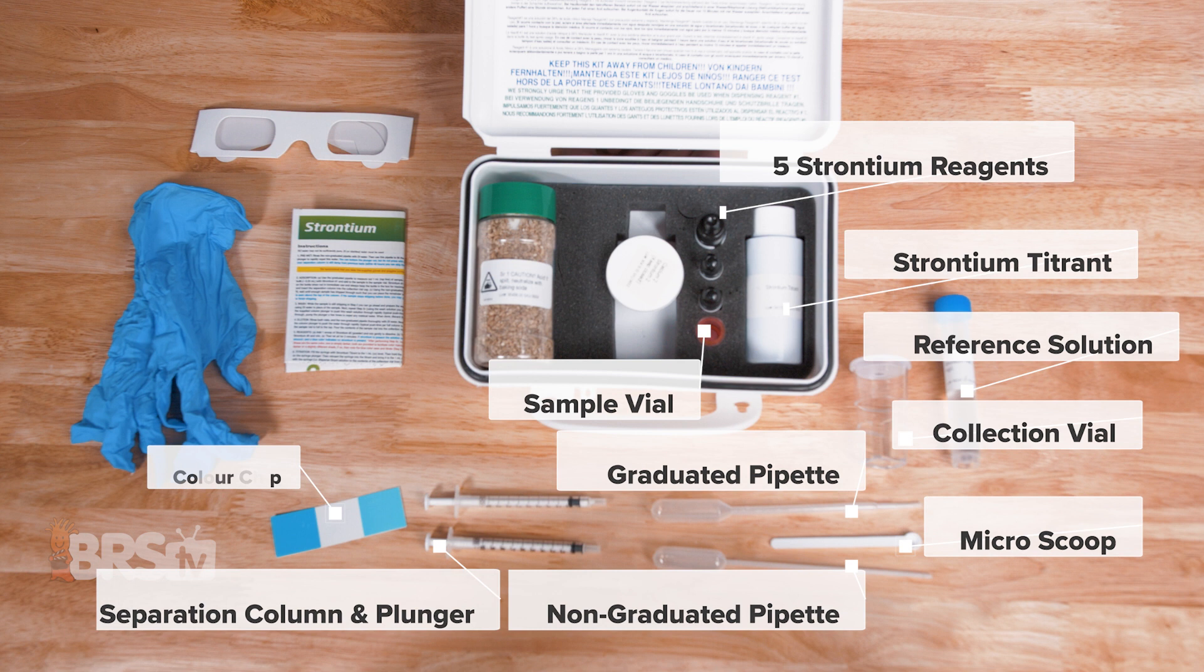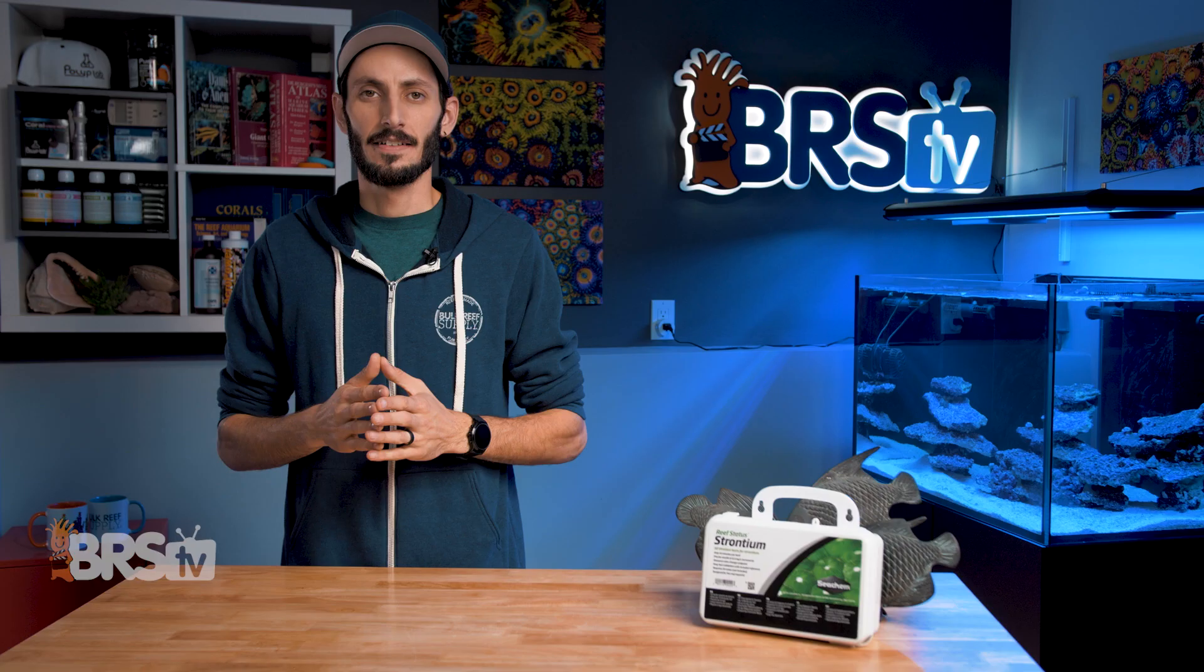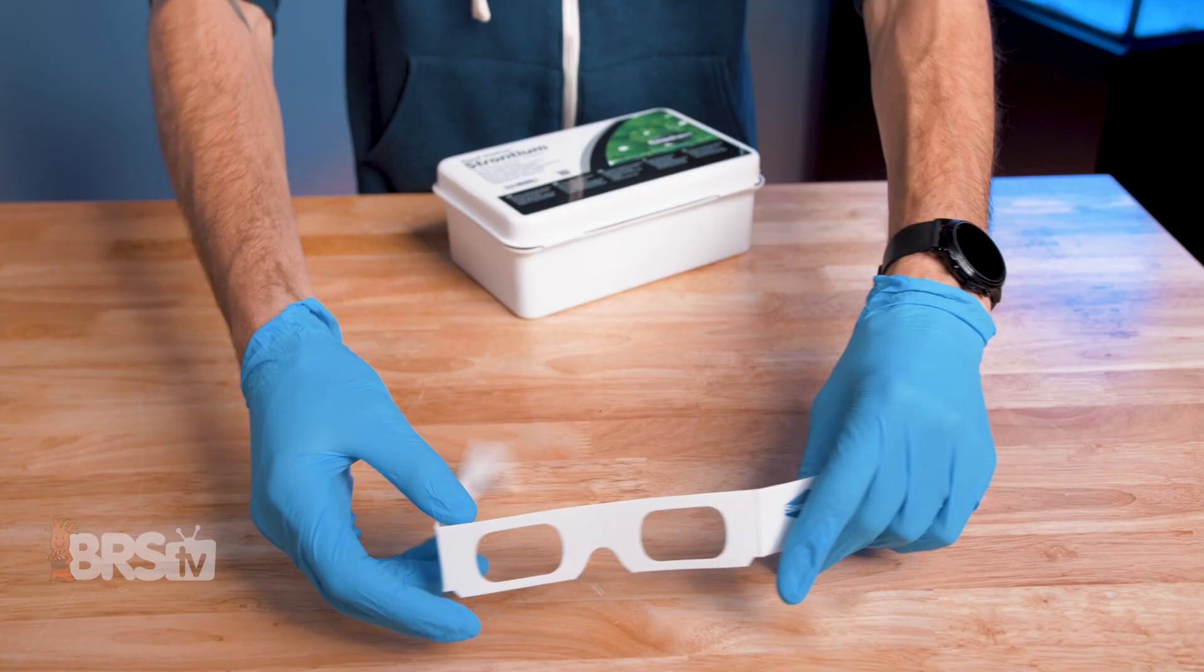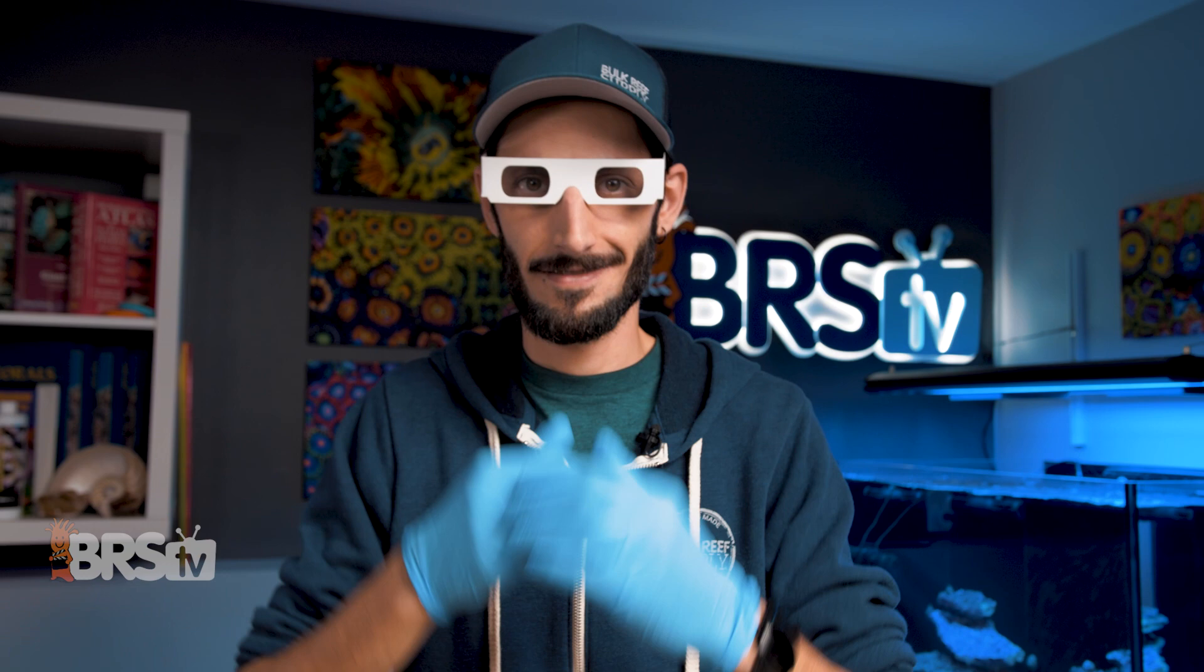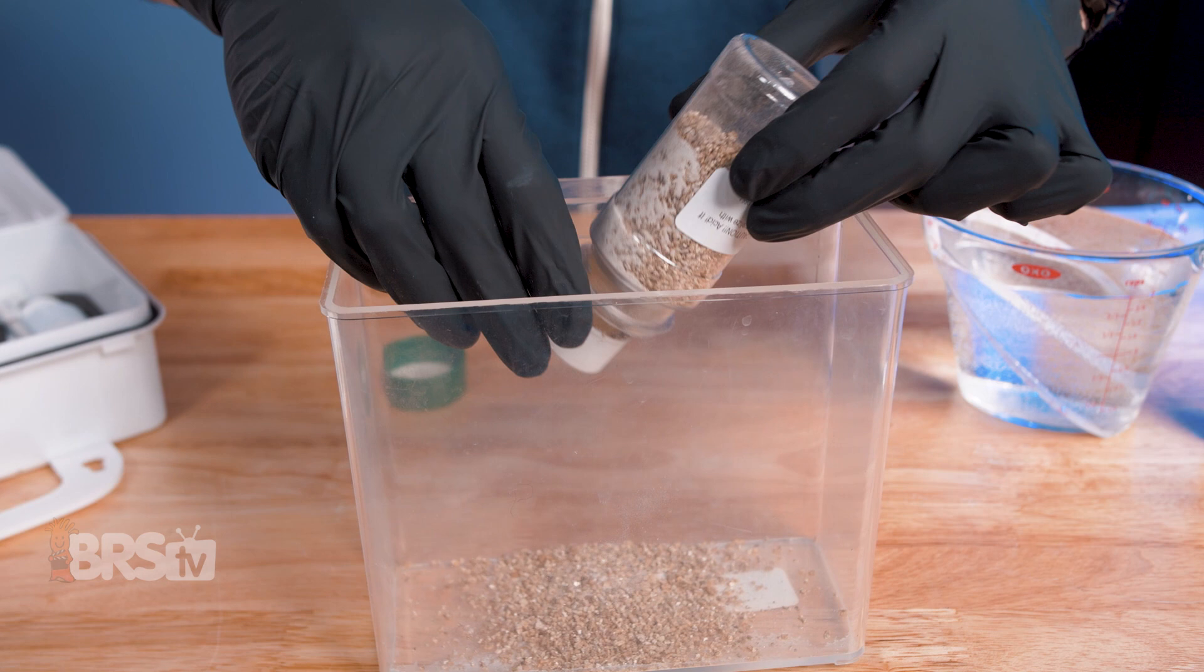Before we dive into how this test is performed, which I'm going to show you, it is important to mention that reagent number one is a very strong acid, and Seachem includes some simple personal protection equipment for you to wear while performing the test. The bottle of reagent one comes stored inside of an extra container filled with vermiculite and a neutralizing agent, just in case it leaks in transit. So be diligent when performing the test and keep some baking soda on hand, just in case you spill or drip the reagent by accident.